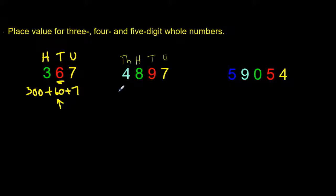If we were to partition this, it would look like this: it would be 4000 plus 800 plus 90 plus 7.